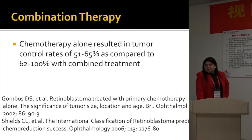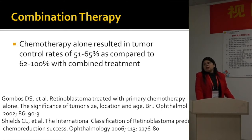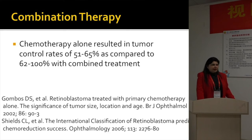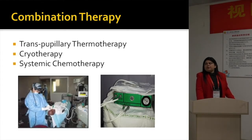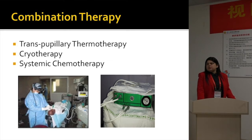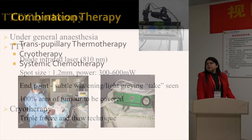Combination therapy is what we use, like most centers worldwide — combined systemic chemotherapy with focal therapy — because studies have shown that chemotherapy alone resulted in lower tumor control rates compared to combined treatment. At our center we don't use laser; we use transpupillary thermotherapy for tumors posterior to the equator and cryotherapy for tumors anterior to the equator, combined with systemic chemotherapy.